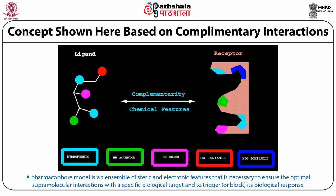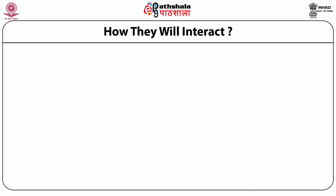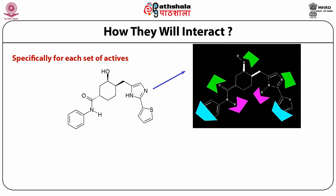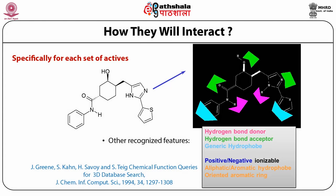By collecting many active compounds we can overcome this limitation, as will be shown in subsequent examples. The complementary interactions include hydrogen bond donor, hydrogen bond acceptor, and others as shown color-coded in the picture. It can be much more than that — like aromatic, aliphatic hydrophobics, and also oriented aromatic rings.